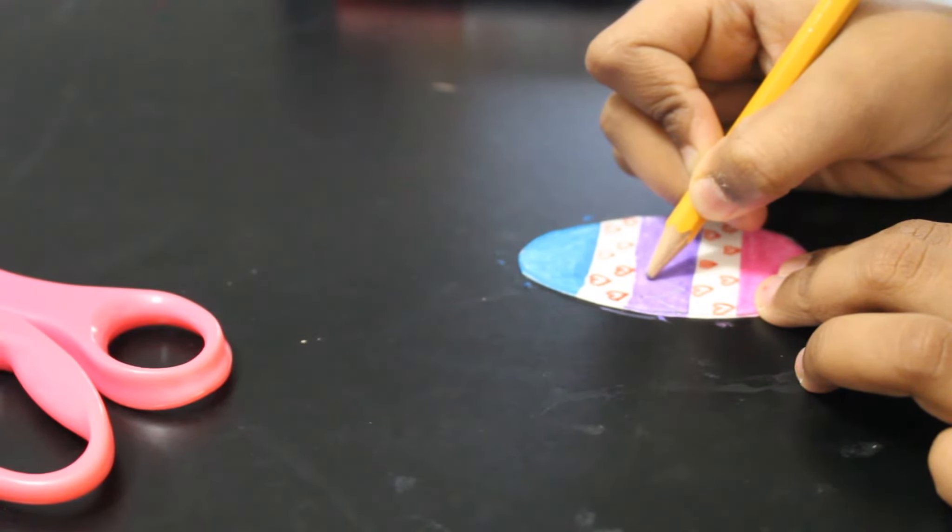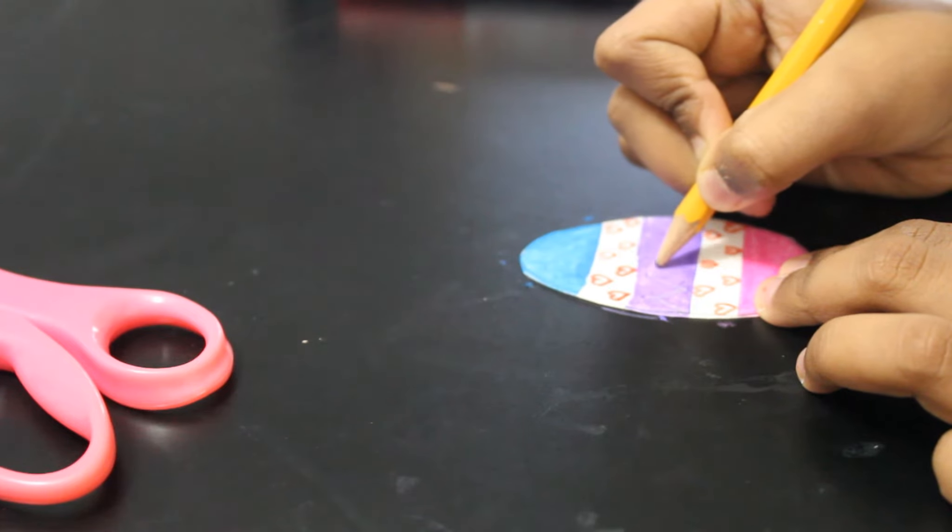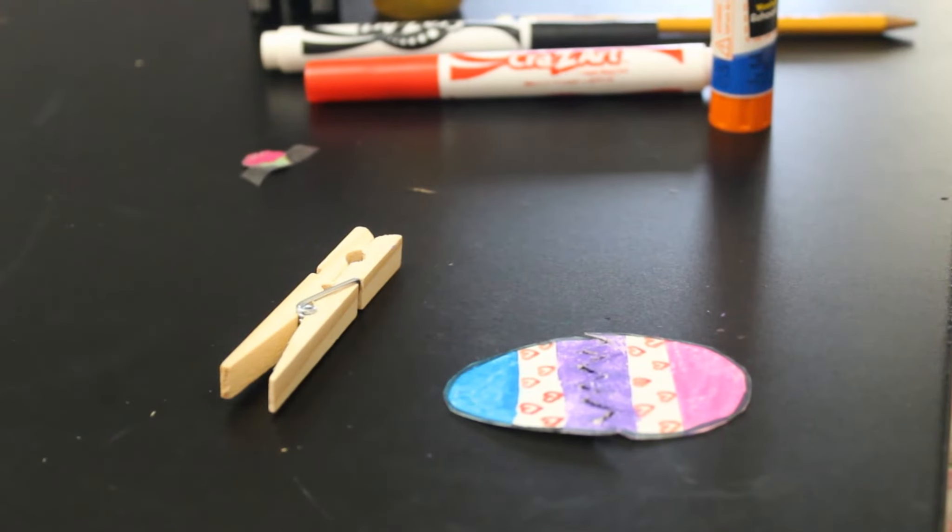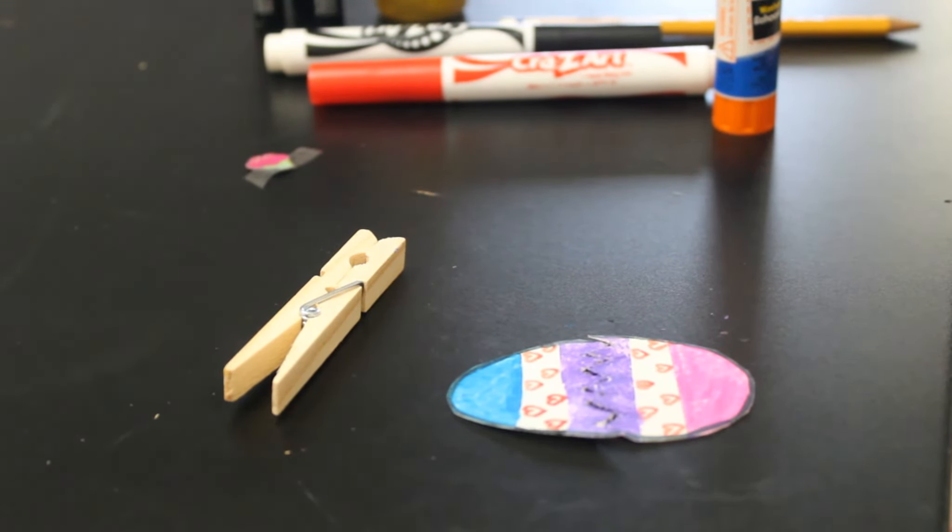Next I am going to draw a zig-zag line on the middle of the egg, then I am going to cut it out. Now our egg is ready. Next I am going to paste the egg in the paper clip.